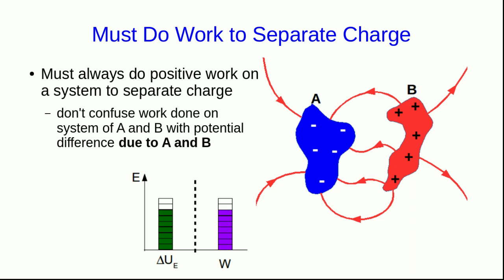We did work on A and B, and so they gained electric potential energy. Now, if we think of some pair of positions, one and two, and a path between them, if we were to take some other charge and move it from one to two, then we could define the potential difference between one to two as the negative of the electrostatic work done on this probe charge, divided by the probe charge.